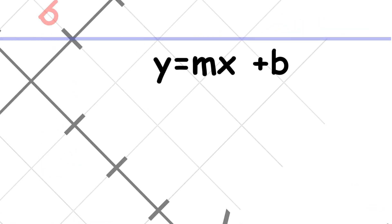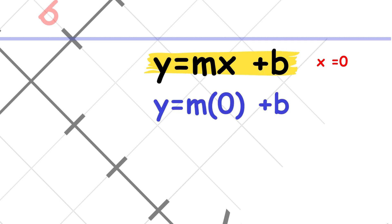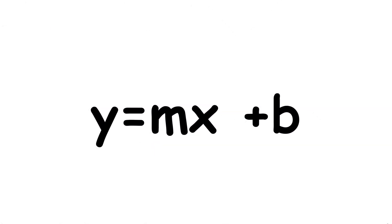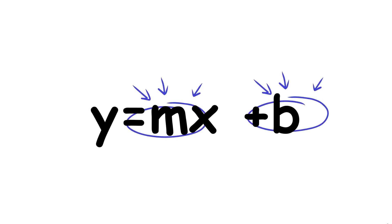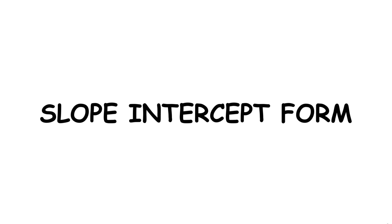The y-intercept can be found by setting x equal to 0 in the equation y equals mx plus b, which gives y equals m times 0 plus b, or y equals b. Because the form y equals mx plus b directly gives the slope and the y-intercept of the graph, it is called slope-intercept form.